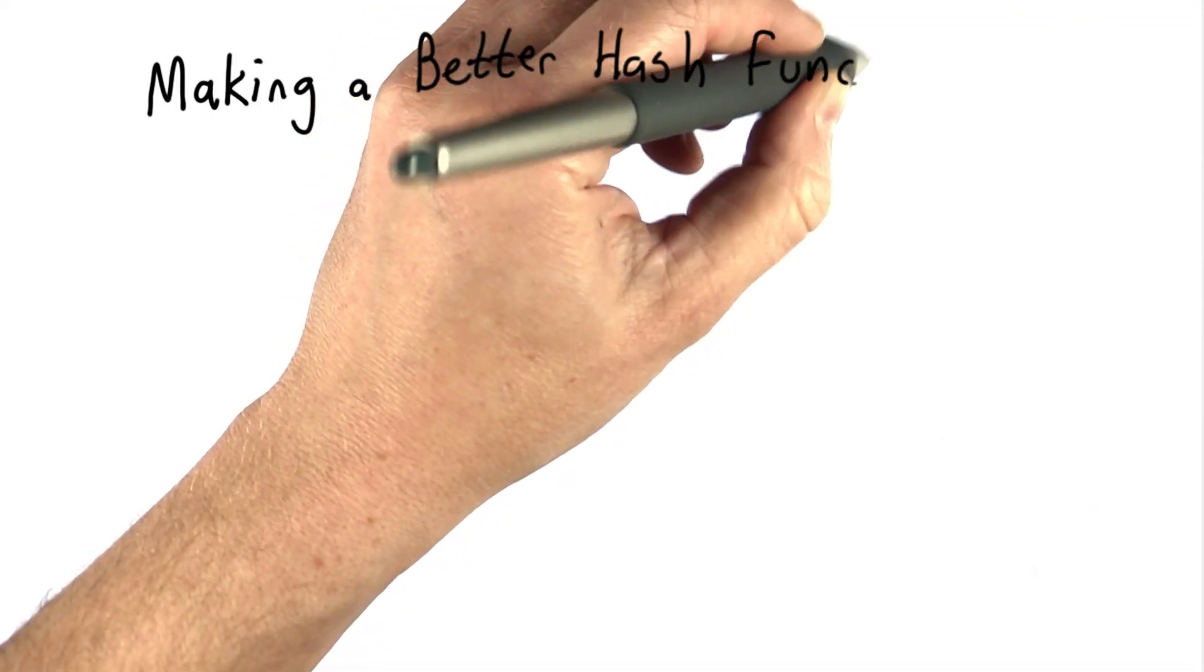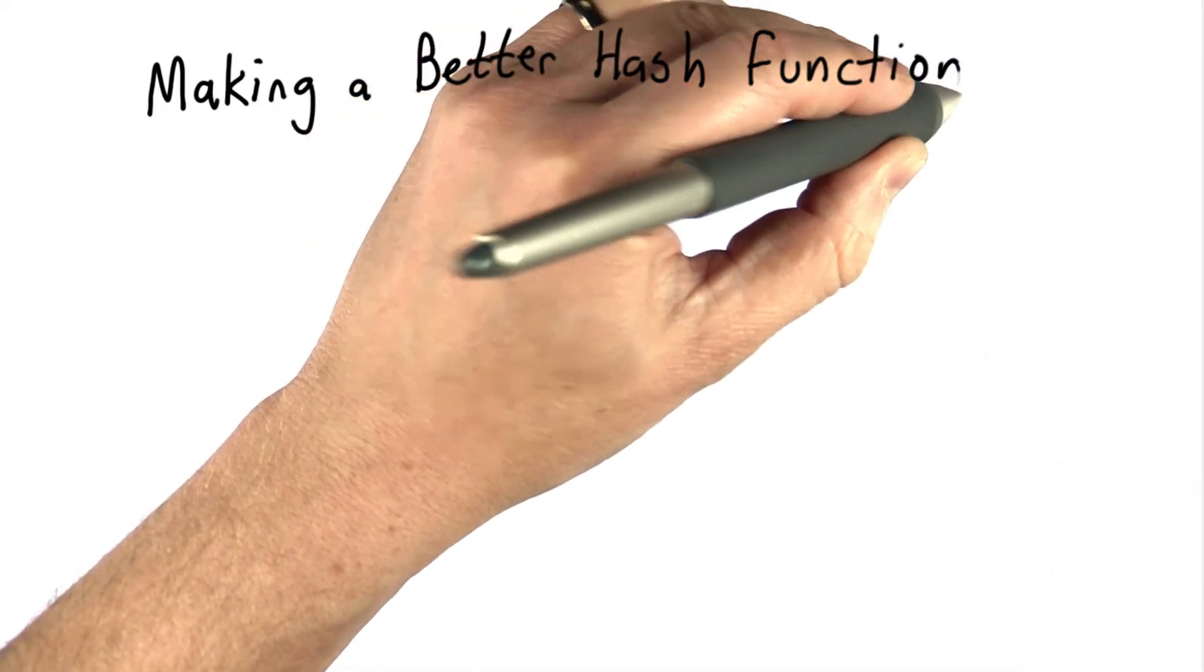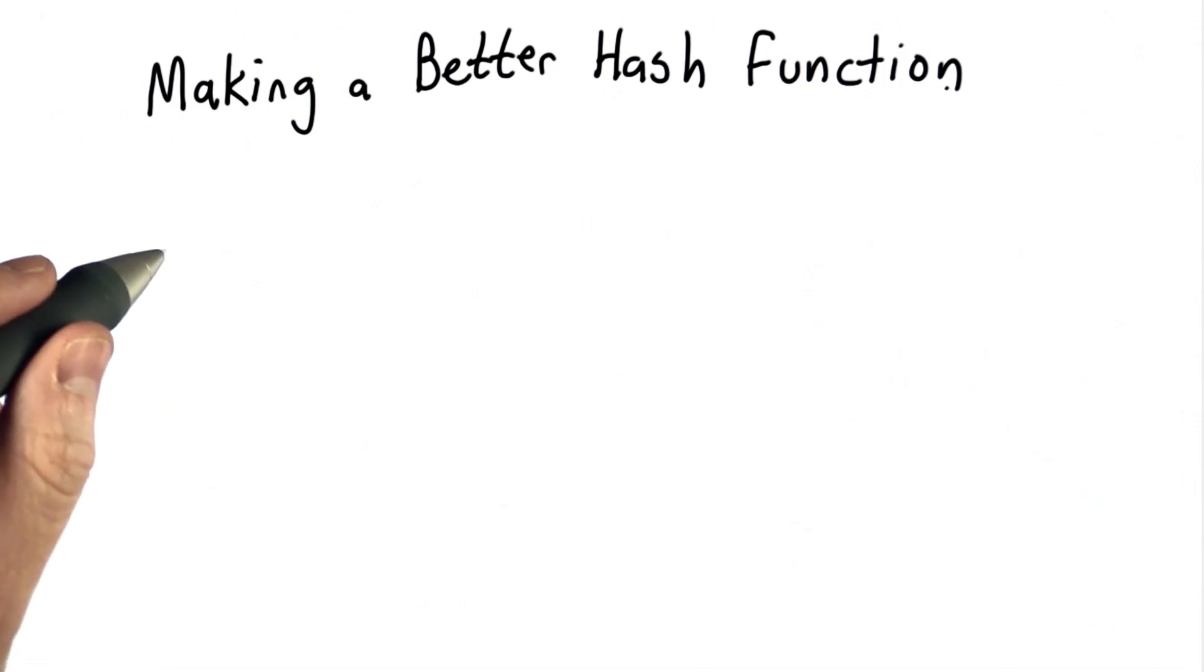We've seen the basic approach of looking at just the first letter does not work very well. It doesn't use enough buckets, and it doesn't distribute the keys well. So now we're going to think about how to make a better hash function.